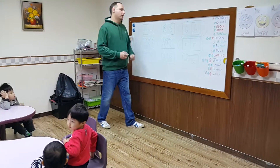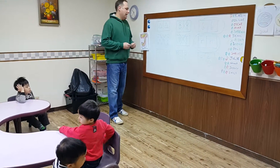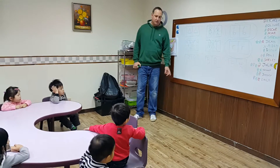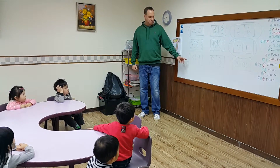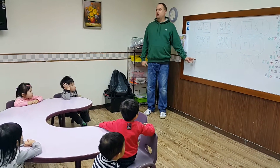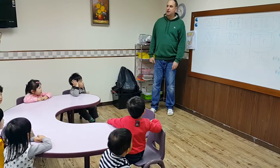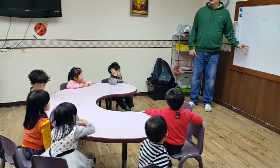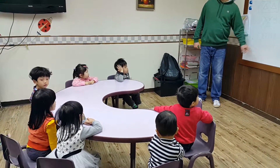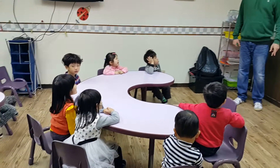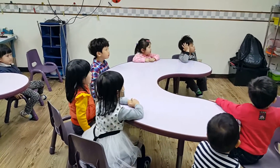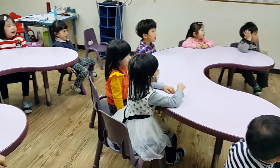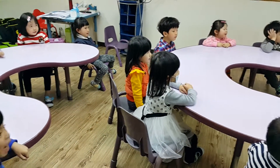Circle it. There we go. And next, what do we see in these boxes? Three and nine. Are they the same or different? They are different. Everyone say, they are different. They are different.